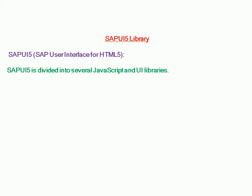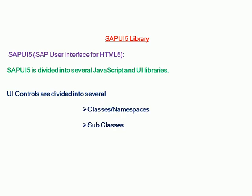SAPUI5 is SAP User Interface for HTML5. It is divided into several JavaScript and UI libraries. UI Controls are divided into several classes, also called as namespaces, and further divided into subclasses. The default UI resource is sap-ui-core.js.